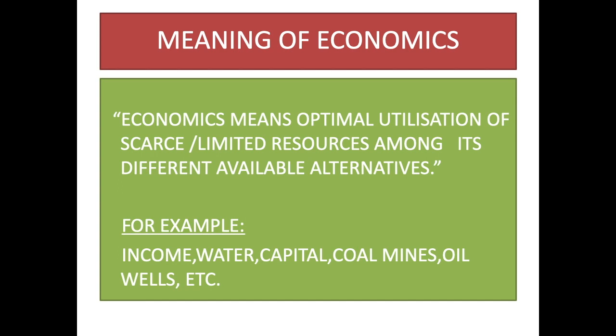We can use our limited resources in a proper, planned way because our limited resources have different alternatives available. For example: income, water, capital, coal mines, oil wells, and many other resources. Taking the example of water — water can be used for brushing, washing clothes, cooking, and many other purposes. So we have to decide on a priority basis how to use water, a limited resource, giving first priority to cooking, then brushing or cleaning. This is the kind of solution economics provides.